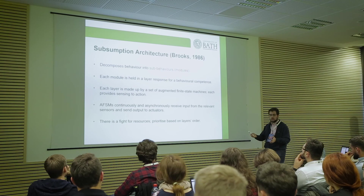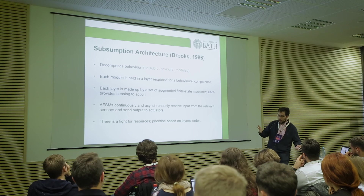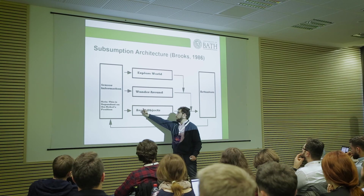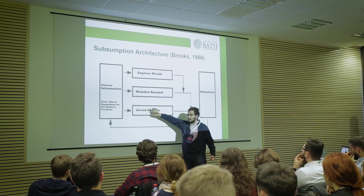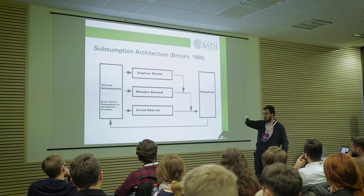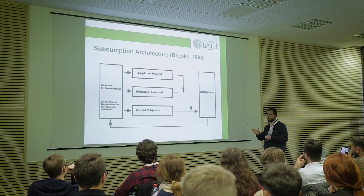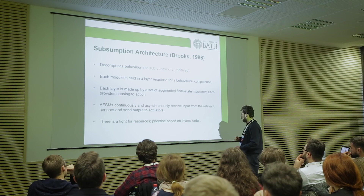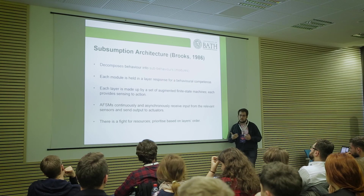Brooks's approach was using augmented finite state machines, where each layer has a set of state machines that dictate the current state of the layer — for example in 'avoid objects,' one state is 'nothing detected,' and when sensor information shows proximity to an object, it transitions to another state like 'reversing to avoid,' then back to 'nothing detected.' What Brooks realized is that instead of having everything in one peak action selection mechanism, you create more modular agents by decomposing behaviors, having each module in a layer responsible for a behavior competence. His approach is so popular that all cognitive architectures and most action selection mechanisms today use it.